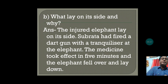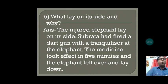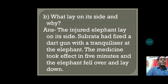The next question 4B is: what lay on its side and why? The injured elephant lay on its side — it fell on the ground. Subrat had fired a dart gun with a tranquilizer at the elephant. The medicine took effect in about five minutes and the elephant fell over and lay down on its side.